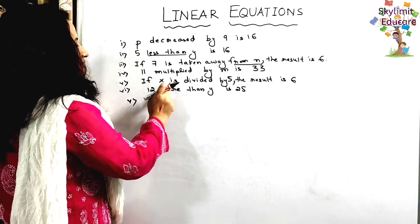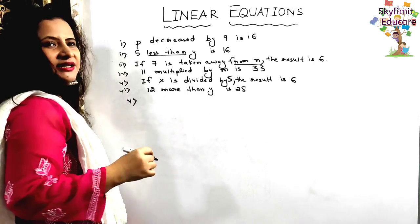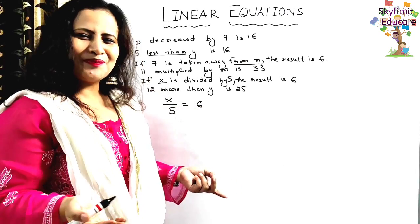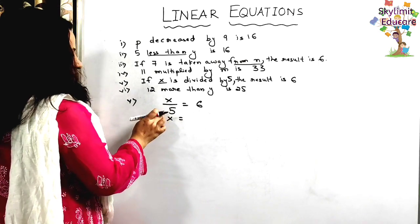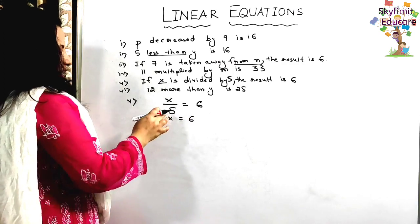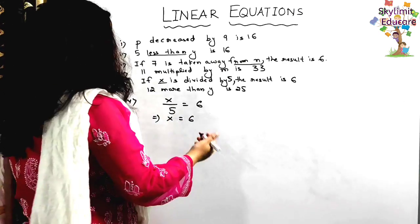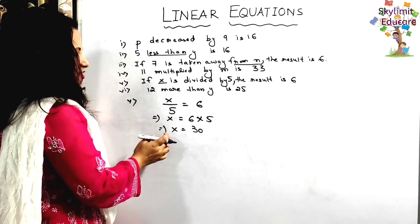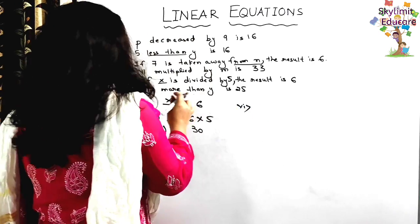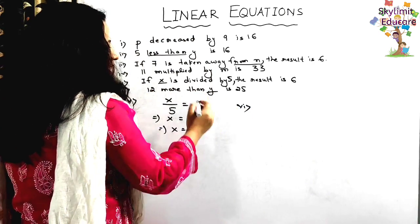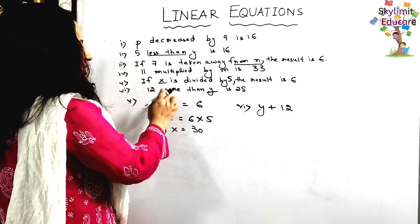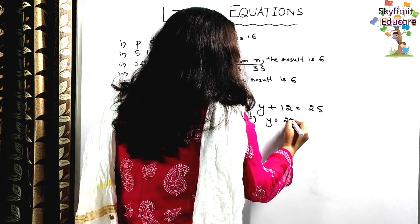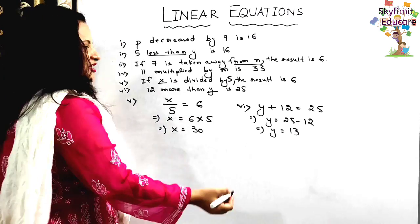Statement 5: 'x divided by 5, the result is 6.' The equation is x divided by 5 equals 6. Shift 5 to the right-hand side — division becomes multiplication: x equals 6 times 5 equals 30. Verify: 30 divided by 5 equals 6. Correct. Statement 6: '12 more than y is 25.' Add 12 to y: y plus 12 equals 25. So y equals 25 minus 12 equals 13. Verify: 13 plus 12 equals 25. Correct.